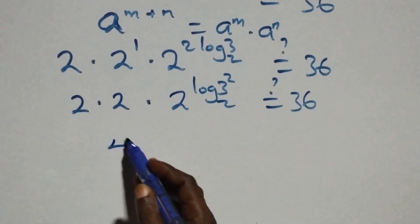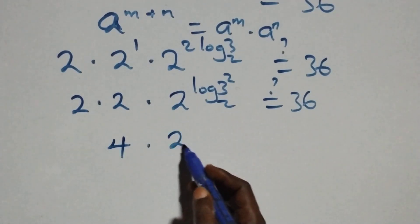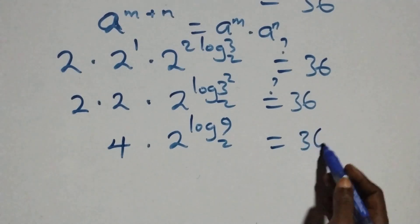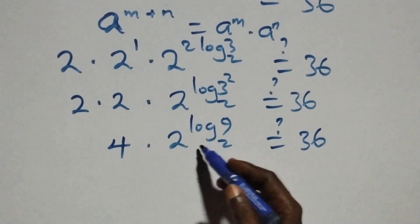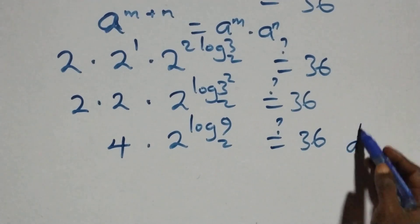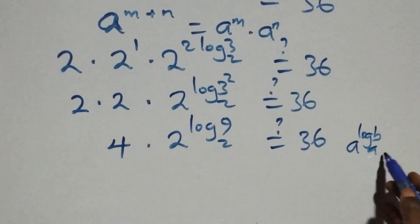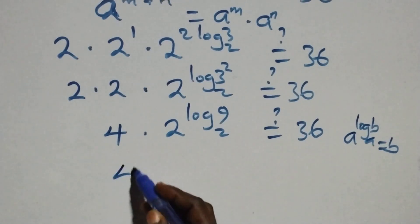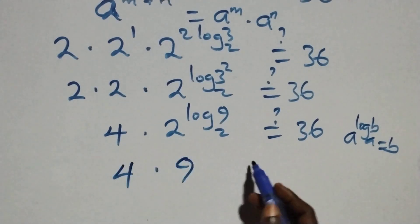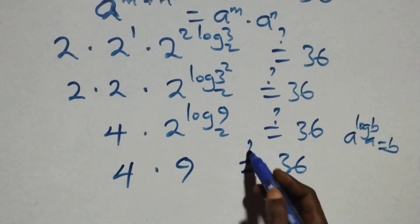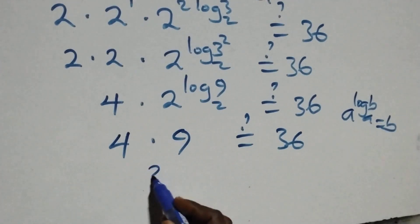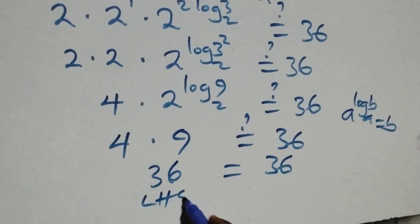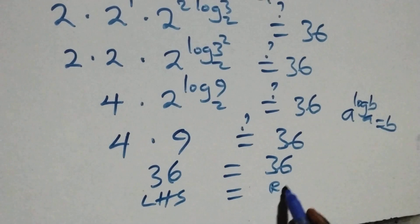Then 2 times 2 gives 4, times 2 raised to power log 9 base 2 equals 36. Applying the rule a raised to power log_a(b) equals b, we get 2 raised to power log₂9 equals 9. So we have 4 times 9 equals 36, and of course 4 times 9 gives us 36, which equals 36. Left-hand side equals the right-hand side.